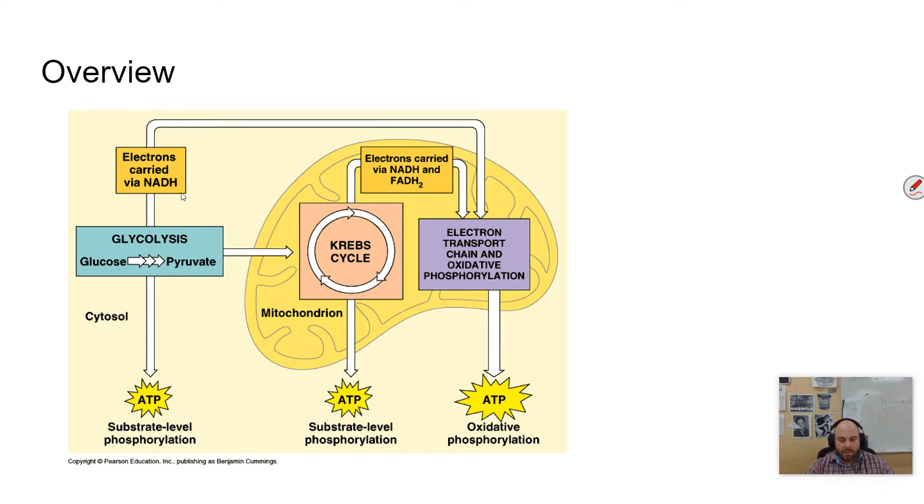Then you have a step called pyruvate oxidation, where pyruvate is broken down and oxidized, which occurs in the mitochondria and leads directly into a process called the Krebs cycle, in which that product of pyruvate oxidation is further broken down, occurs in the mitochondrial matrix, and CO2 is released as a byproduct, and more electron carriers are produced in this process. As you can see, ATP is also a product here, but it's not very much.